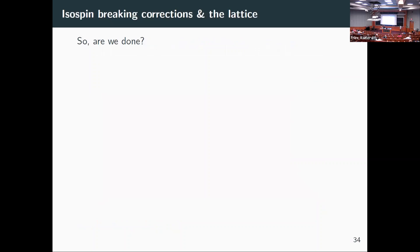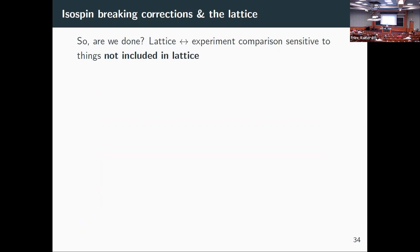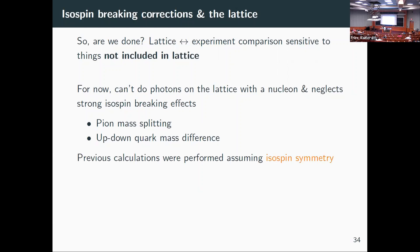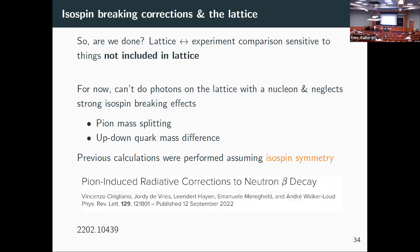We have these two numbers — are we done? If we have the lattice and we have experiments, we're sensitive to everything not included in the lattice. On the lattice we can't do photons — we can't put a nucleon on the lattice and add a photon. There are also isospin breaking effects: the neutral pion doesn't weigh as much as the charged pion, the up quark doesn't weigh the same as the down quark. Previous calculations assumed isospin symmetry. This is a paper we just worked on — posted online a couple days ago — discussing some of these improvements.